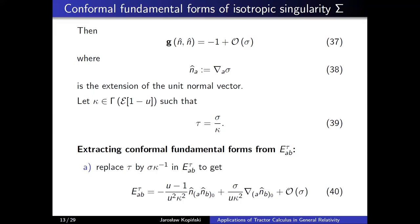With both σ and τ in hand — two defining densities of the boundary — I introduce a third scale κ of weight (1 − u), denoted in equation 39, which serves as a transition between τ and σ. Now replacing every instance of τ by σ/κ in the expression for E_τ, I obtain the expression visible on the right-hand side of equation 40.